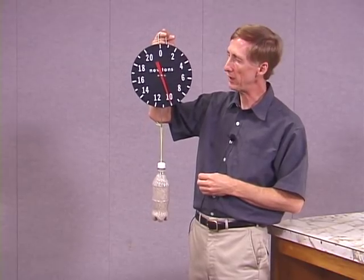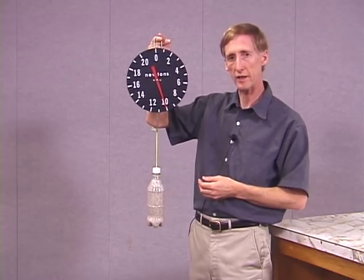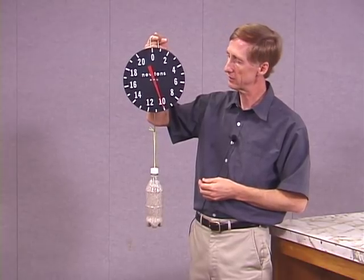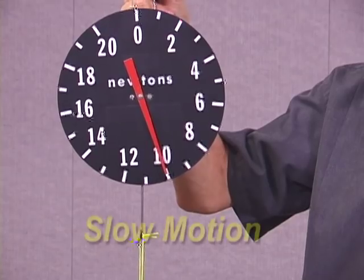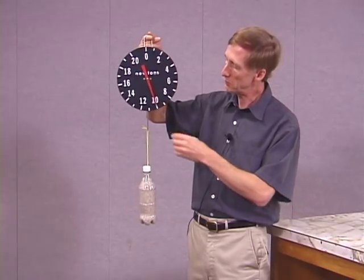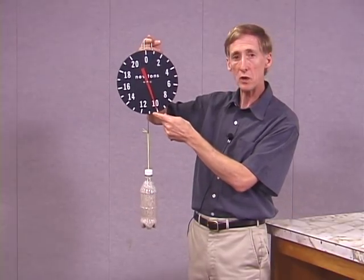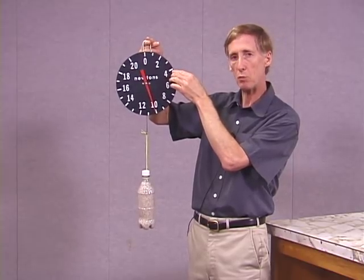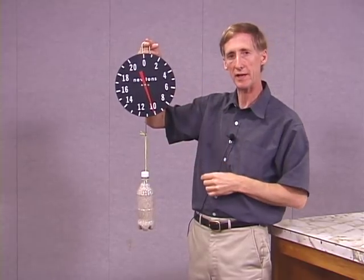Now let's take a look at the situation where we lower the scale quickly. In other words, we give it a downward acceleration. Watch closely when I do this. All right, what you probably saw was as soon as I started to lower it, the needle moved this way very quickly, so the reading went down. Of course, it came to a stop when I came to a stop and went back the other direction.